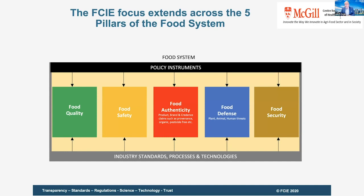When we develop solutions and put them together as an architecture, we look at transparency, standards, regulations, science, technology, and trust across all five pillars — because the requirements will be different across each of them.